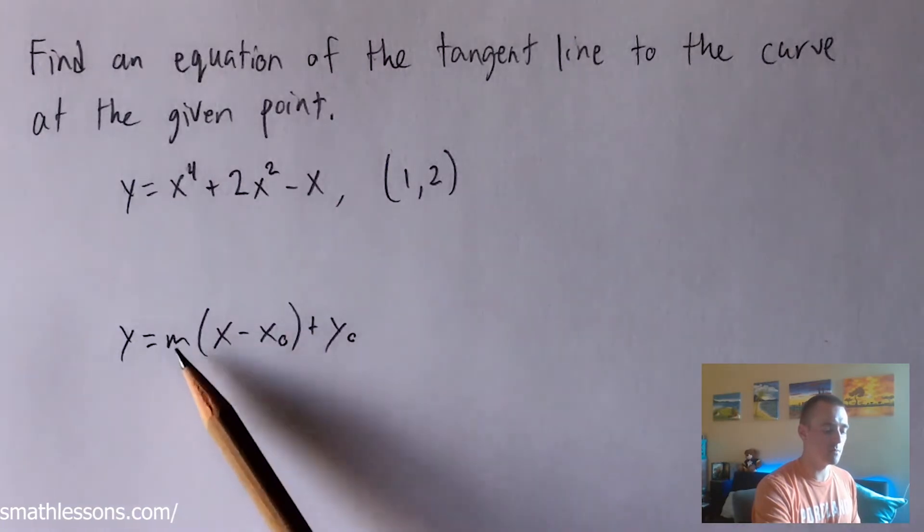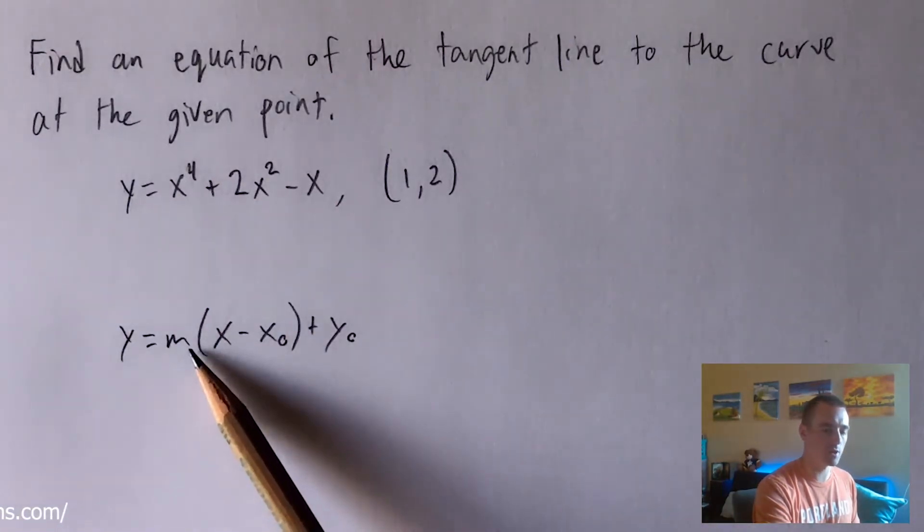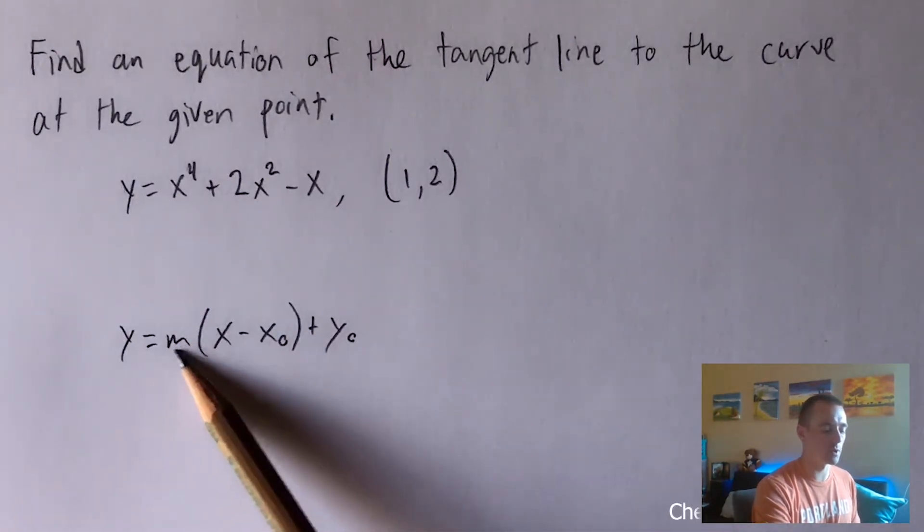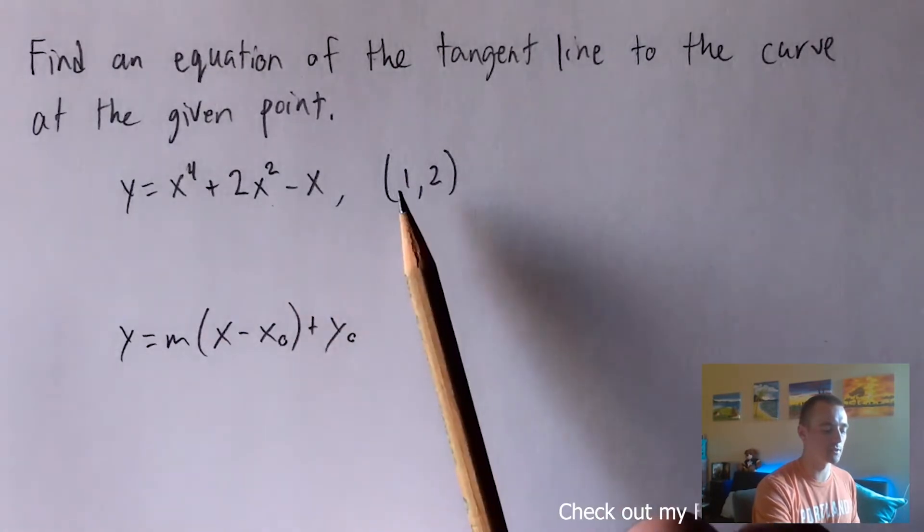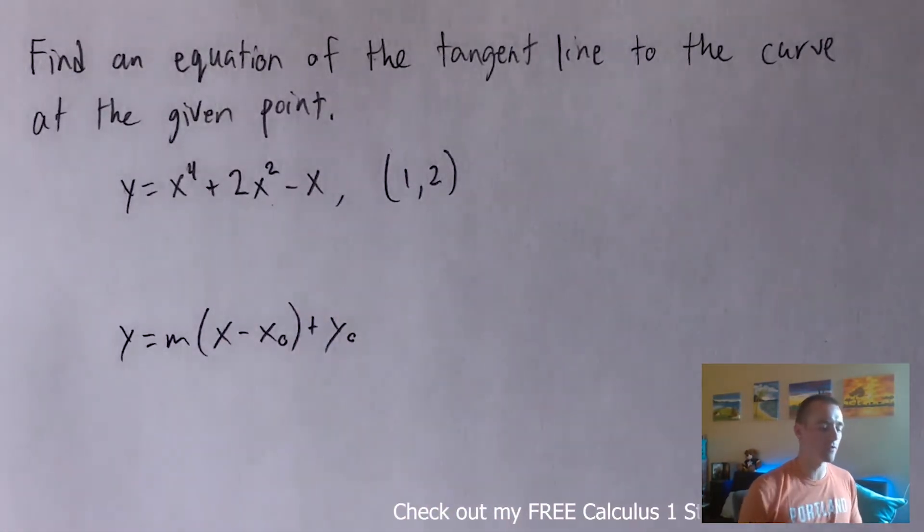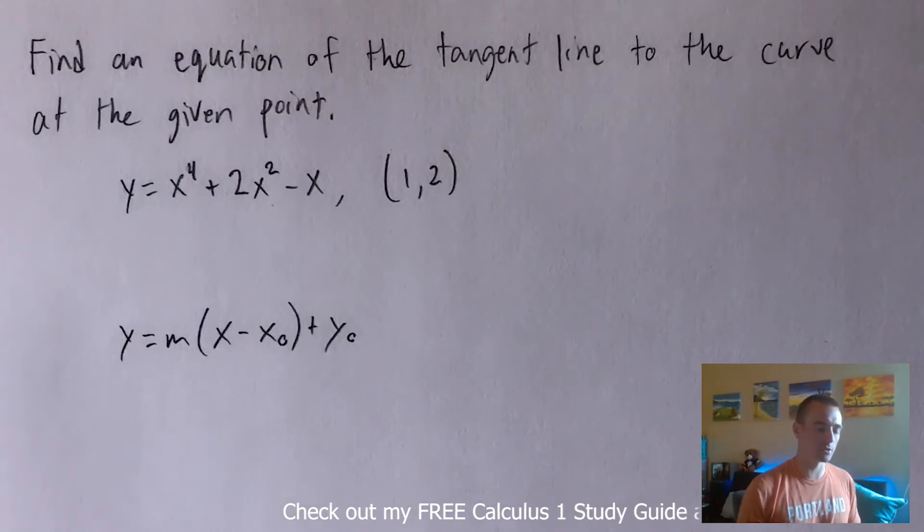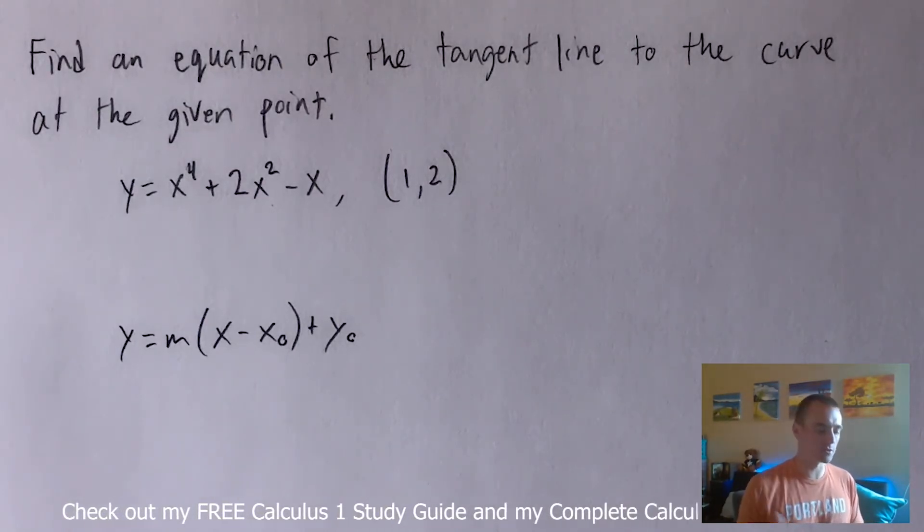Since m tells us about the slope of this tangent line we know that m is going to be whatever the slope of this function is when x equals 1. Well in order to find the slope of a specific function at a specific x value all you have to do is take that function's derivative.